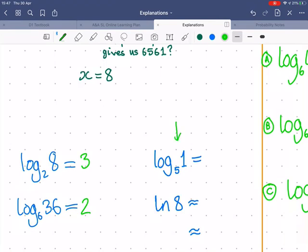Log base 5 of 1. Well, what power of 5 gives us 1? It's almost as if we're solving this. And you may remember from your exponent rules that 5 to the power of 0 gives you 1. Or anything to the power of 0 gives you 1.